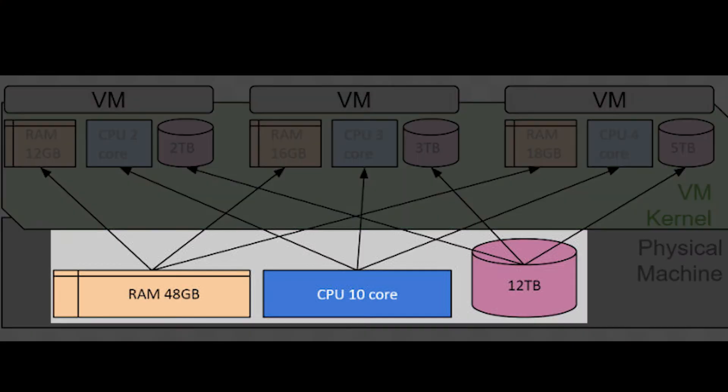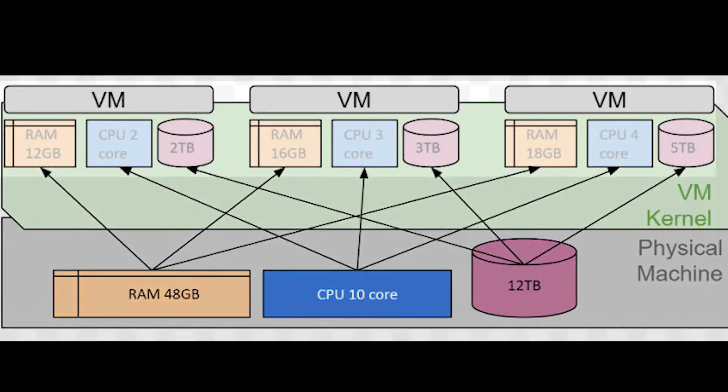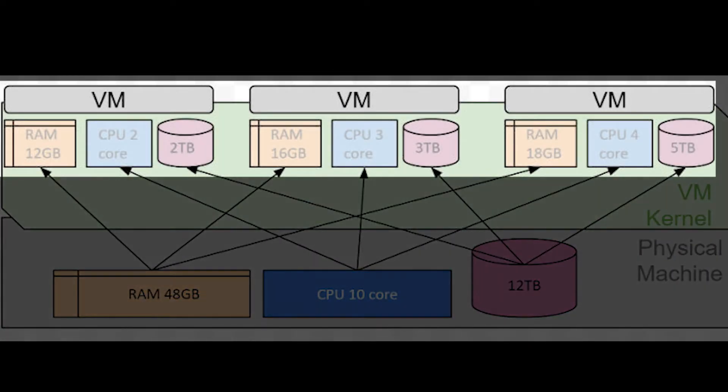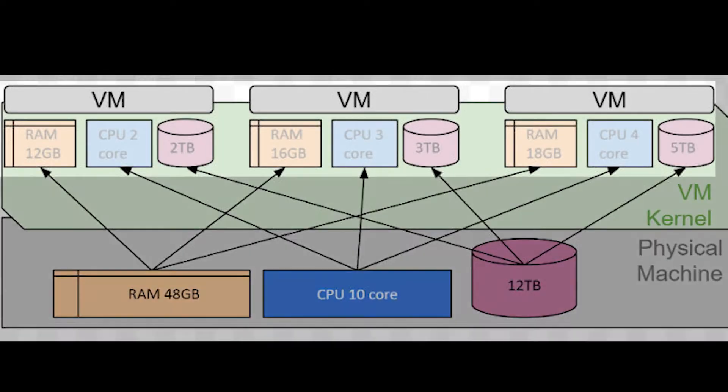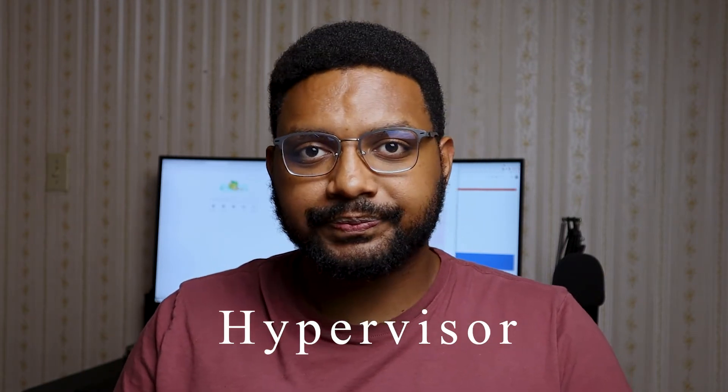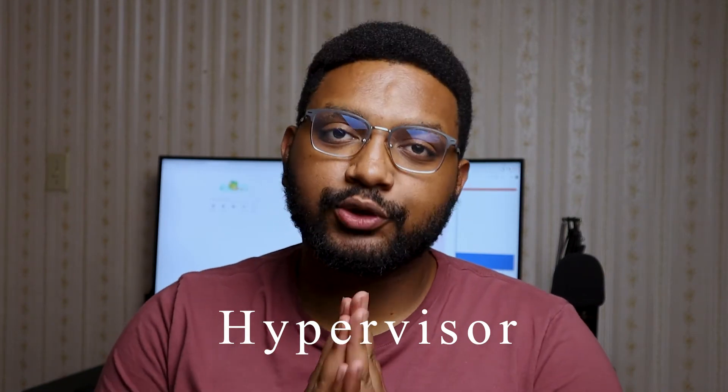Does that mean you have to get another computer just to install Linux on it? No. What virtualization software allows us to do is divide up some of the resources from your computer and let another operating system use them. And that software that lets us emulate virtual machines is called a hypervisor. Now, there are two main types of hypervisors, simply named Type 1 and Type 2.